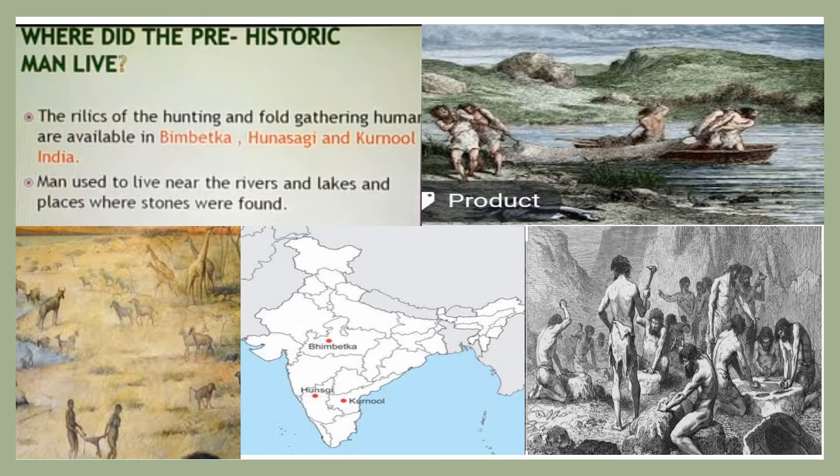Where did prehistoric men live? The relics of hunting and food gathering humans are available in Bimbetka, Hunasagi, and Karnul in India. Historical objects of hunting and food gathering humans have been found in these places, and there are many other sites where such relics have been discovered.